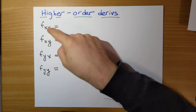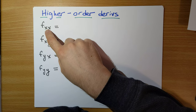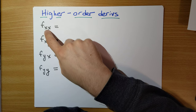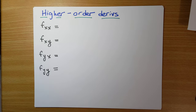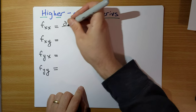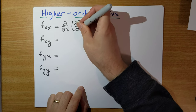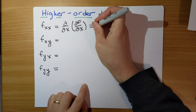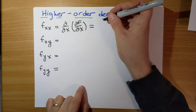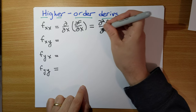One notation — maybe the easiest — is something like f sub xx. So f sub x would be our partial derivative with respect to x. f sub xx is the idea that you take the partial derivative with respect to x of the partial derivative of f with respect to x. First you take the partial derivative of f with respect to x, and then you do another partial derivative with respect to x. We can write this as partial squared f over partial x squared.